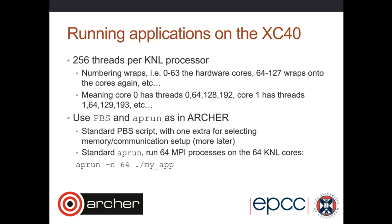This test system will let us see how codes port when using multiple KNLs: how the communication network between them works, and what performance trade-offs we see on MPI versus hybrid. It's quite interesting because many KNL systems use Omnipath or InfiniBand, but here on this Cray test system the KNL nodes are connected together using the Cray Aries network - the same network the Archer nodes use. So it's nice to see what characteristics a high-performance network gives.